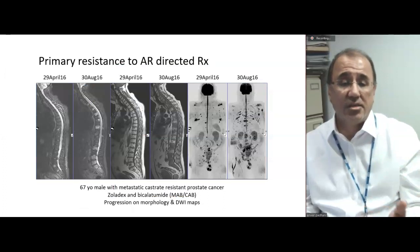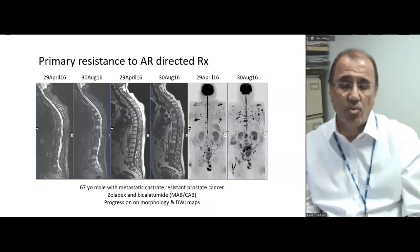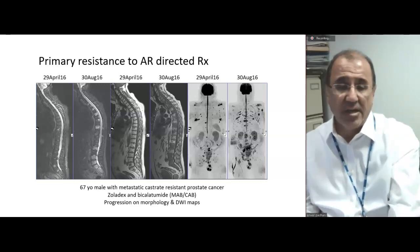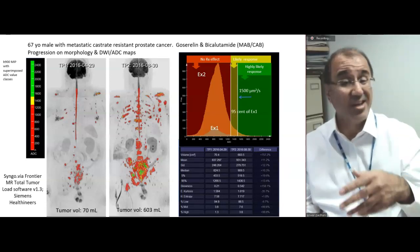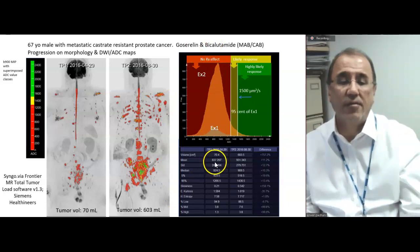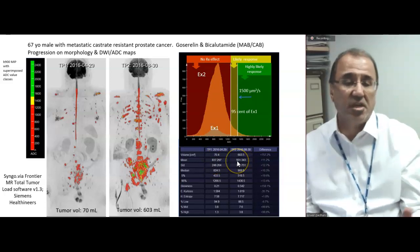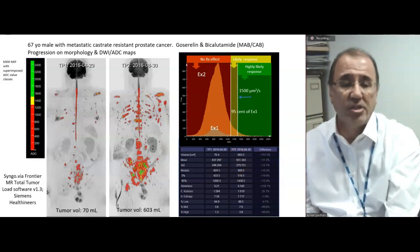Here is a patient with primary resistance to androgen deprivation therapy. You can clearly see this patient is progressing on T1, STIR, and whole-body diffusion sequences. If we segment out the bone marrow, the volume increases from 70 to 600 cc — progression. But look at the ADC: the mean ADC increases only from 840 to 930, so not much change. Just an increase in volume without appreciable change in ADC.